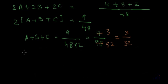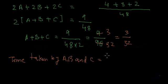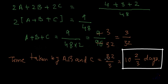Right? So the time taken by A, B and C to finish the job will be 32 by 3 which is 3 times the 30, 2 remainder by 3, 10 2 by 3 days. Right? So this will be the answer. If A, B and C work together they will finish the job in 10 days and 2 3rd part of the 11th day.